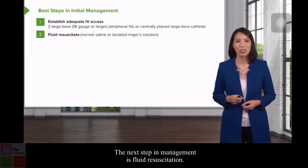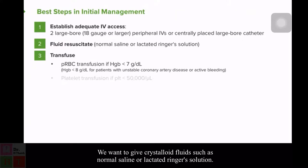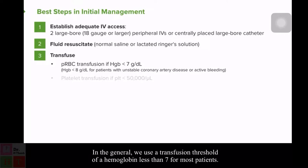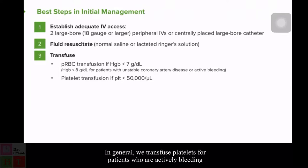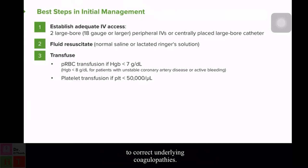The next step is fluid resuscitation with crystalloid fluids such as normal saline or lactated Ringer's solution. Then consider transfusing the patient with blood products. For packed red blood cells (PRBCs), we generally use a transfusion threshold of hemoglobin less than 7 for most patients, though consider a higher threshold of less than 8 for patients with coronary artery disease or active bleeding. Transfuse platelets for actively bleeding patients when baseline platelets are less than 50,000. Other blood products such as fresh frozen plasma (FFP) can be considered to correct underlying coagulopathies.